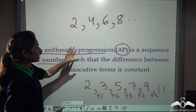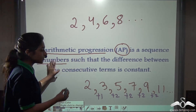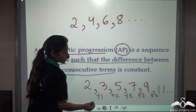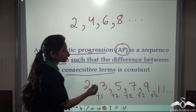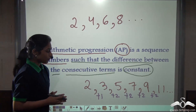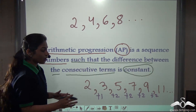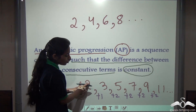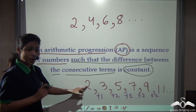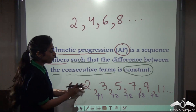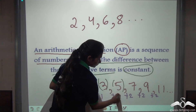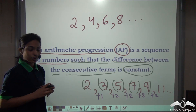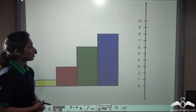So what is an AP series? An arithmetic progression is a sequence of numbers such that the difference between them — meaning consecutive terms — is constant. Any two consecutive terms' difference should be constant. We always take two consecutive terms to find the difference.